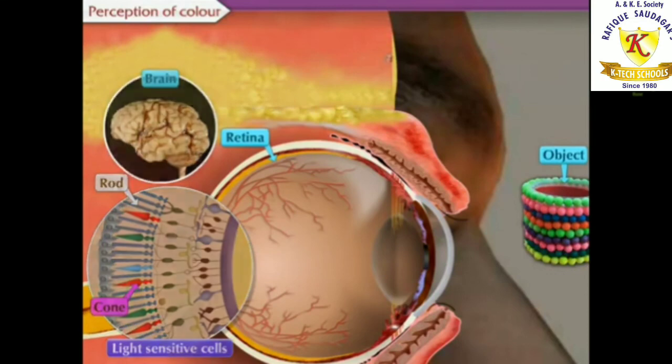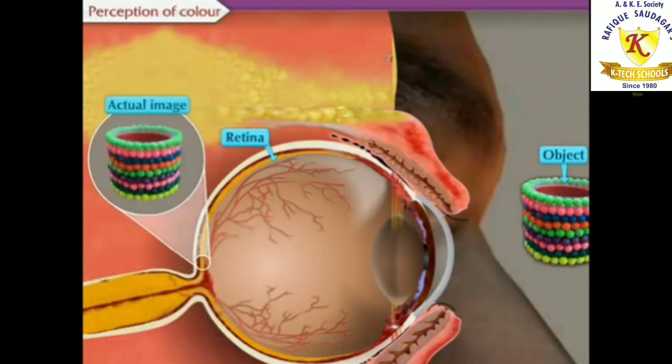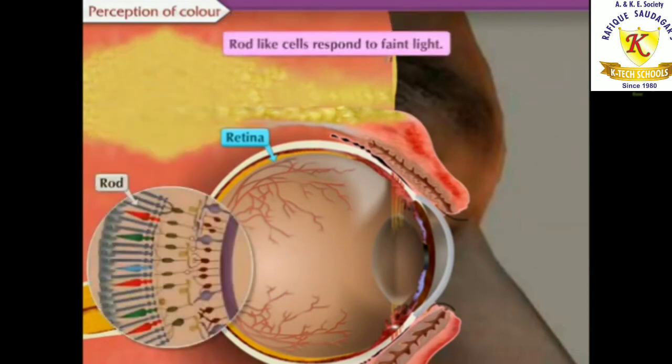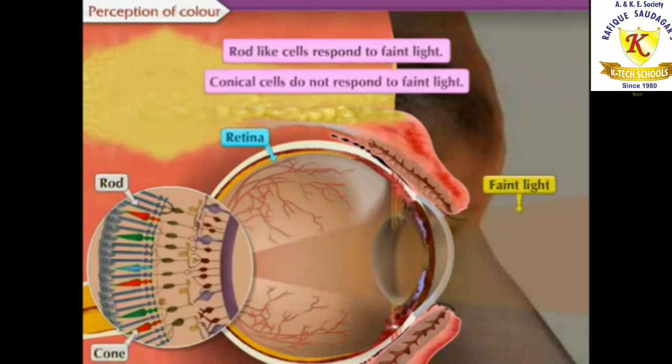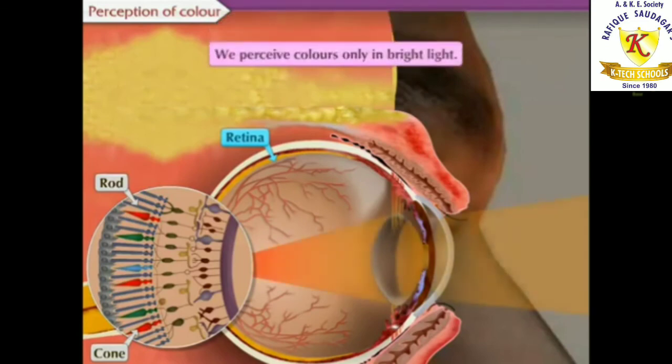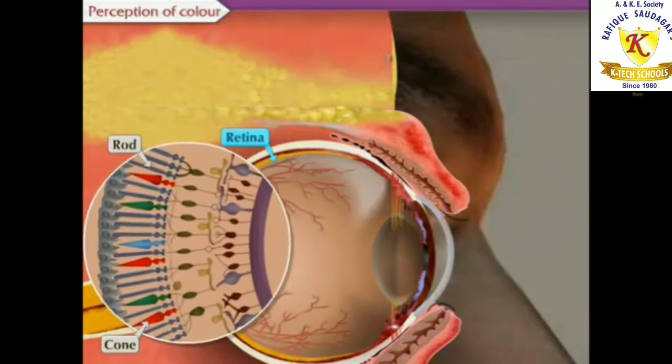The brain processes all the information received and we see the actual image of the object. Rod-like cells respond to faint light also but conical cells do not. Thus, we perceive colors only in bright light.